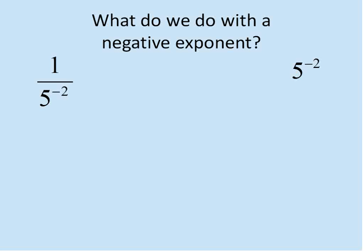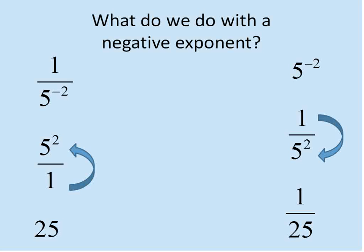What do we do when we get a negative exponent? I've got two examples here to illustrate. I have 1 over 5 to the power of negative 2, and simply 5 to the power of negative 2. Whenever you get a negative exponent, all you need to do is flip it over. If it's on the bottom of the fraction, you put it on the top and the exponent becomes positive. If it's a number by itself, you put it in the denominator with a numerator of 1. So 1 over 5^(-2) equals 25, and 5^(-2) equals 1 over 25.